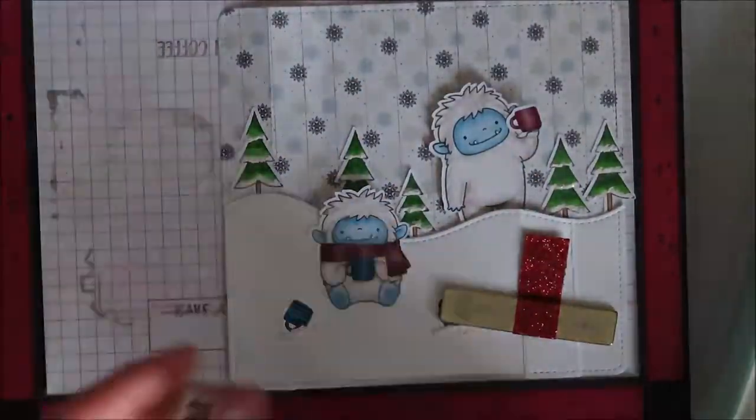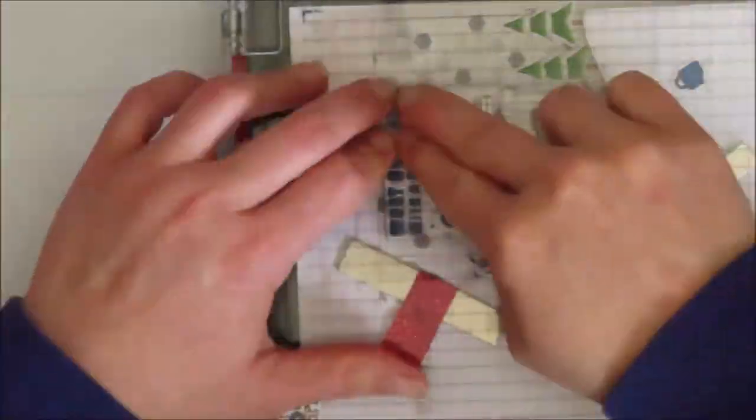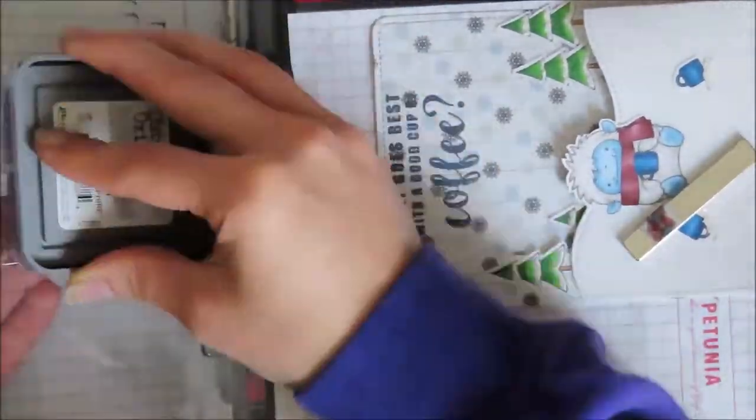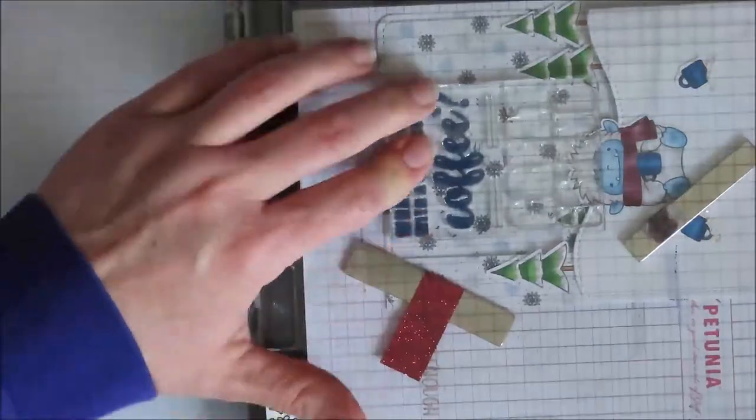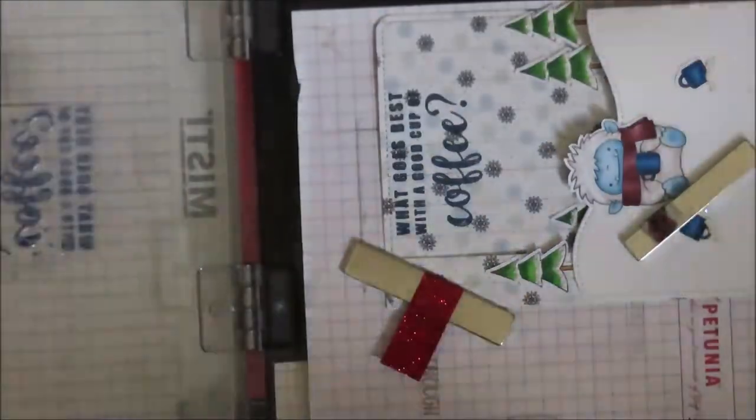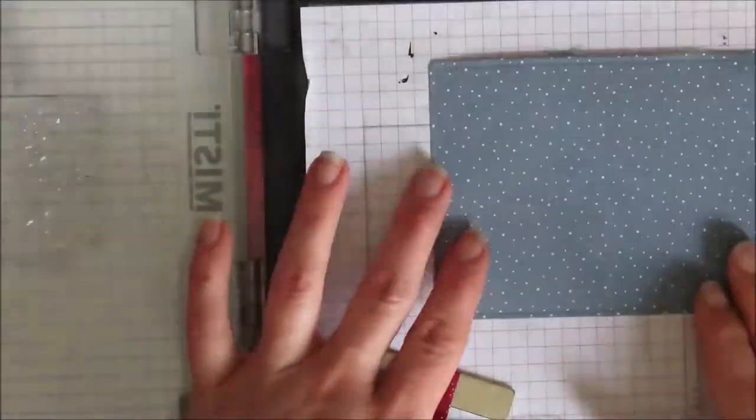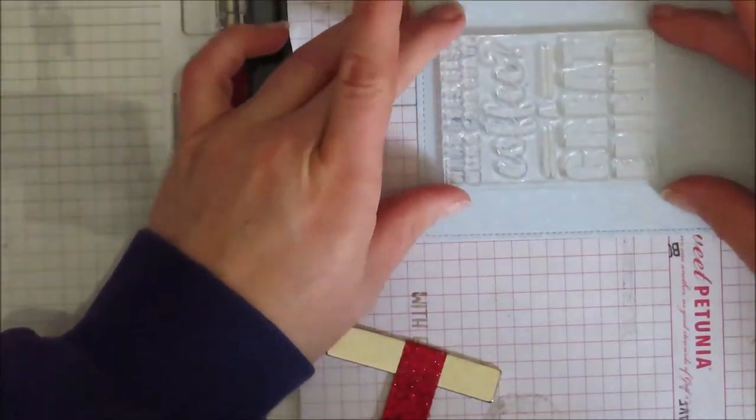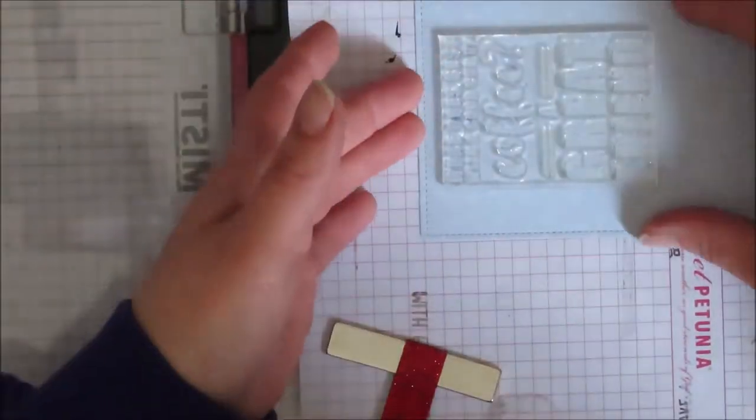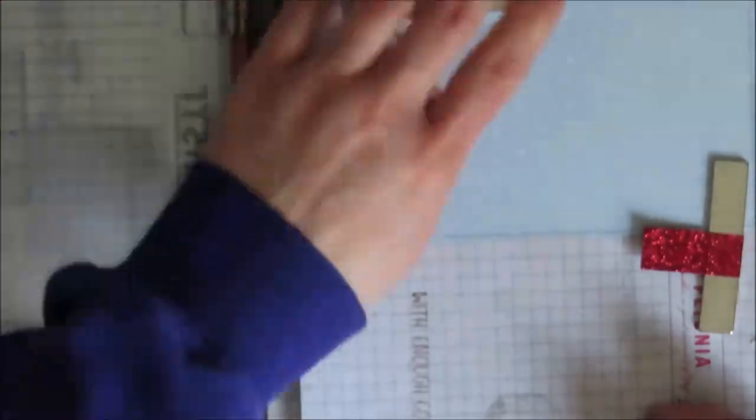And then for this one, I am going to take a stamp set from Simon Says Stamp. It's like a big, I'll list it in the description box below if you are interested. So I'm going to ink this one up as well with that Chipped Sapphire Ink and then I'm just going to stamp this one on top. I'm not going to emboss over it. So what goes best with a good cup of coffee? Of course, this little critter maybe already had three or four cups of coffee. Don't judge. That's what some of us need to get moving and function.